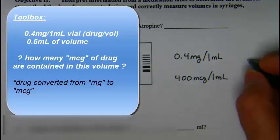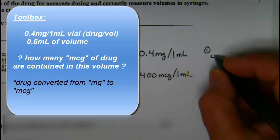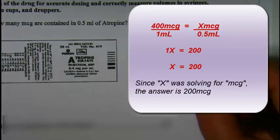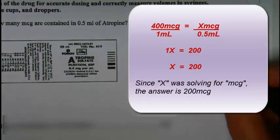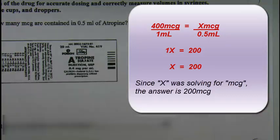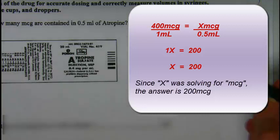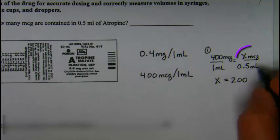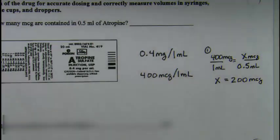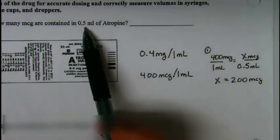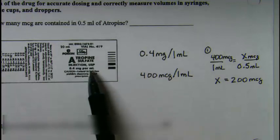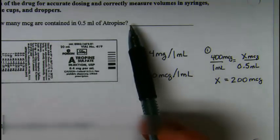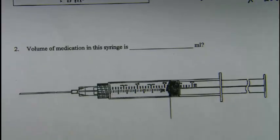So if I'm doing ratio and proportion, I have 400 micrograms for 1 mL, and I need to know 0.5 mL—the value in micrograms. So my ratio and proportion problem: X is equal to 200, and X represents micrograms. So 0.5 milliliters from this mixture is equal to 200 micrograms.